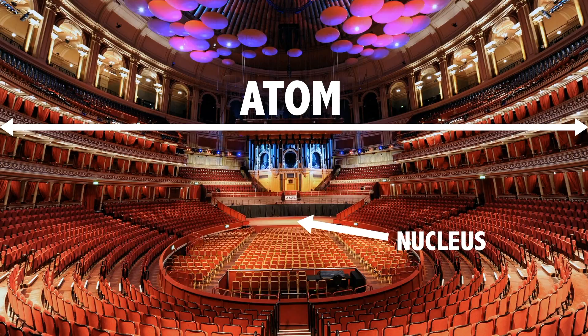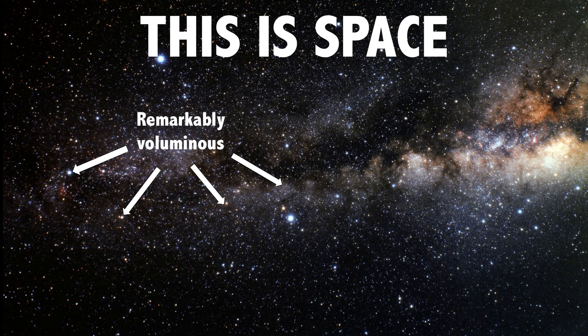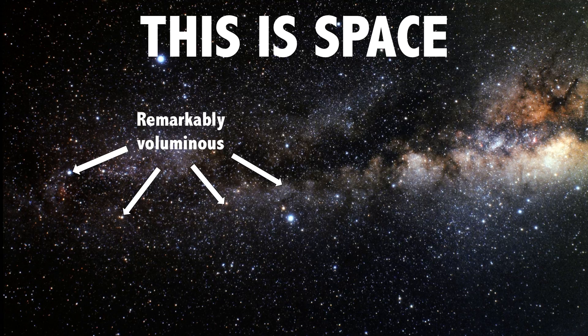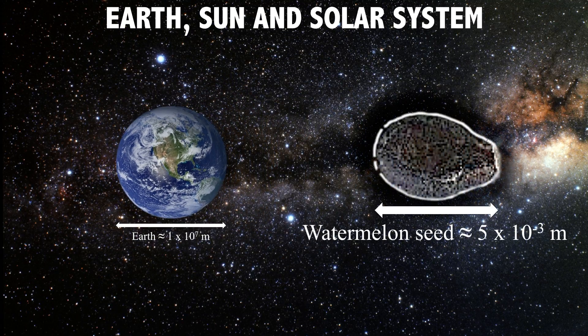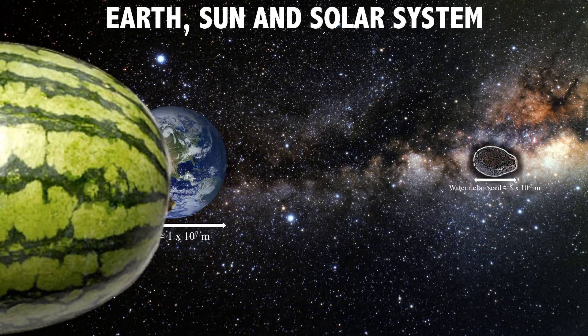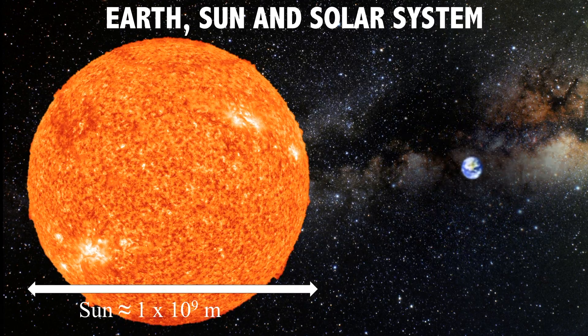The stuff in space is remarkably voluminous, the stuff in space is remarkably rotund. If the Earth was just as teeny as a watermelon seed, a watermelon would be as spacious as the Sun.